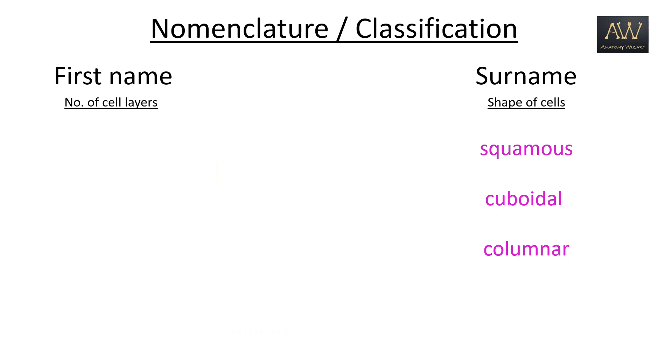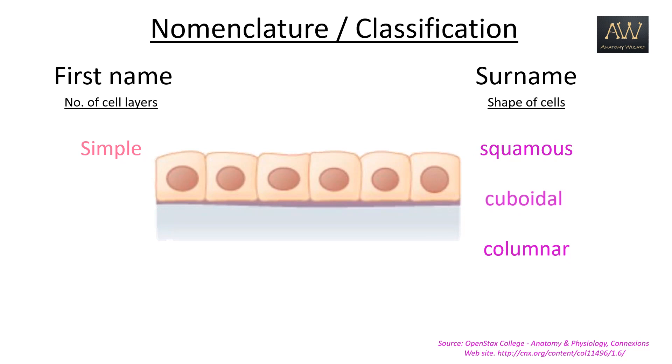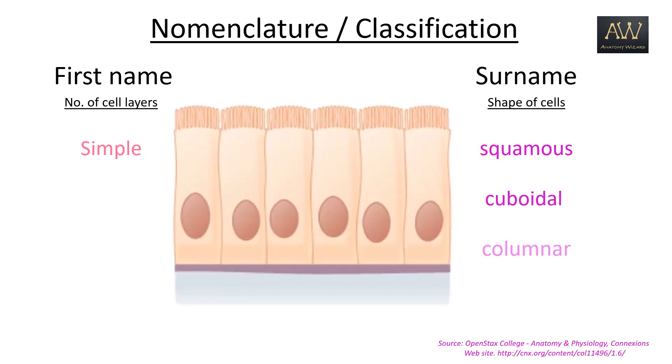The first part of the epithelial's name denotes the number of cell layers present in that particular epithelium. A single layer of epithelial cells is known as a simple epithelium and may be simple squamous, simple cuboidal, or simple columnar epithelium.